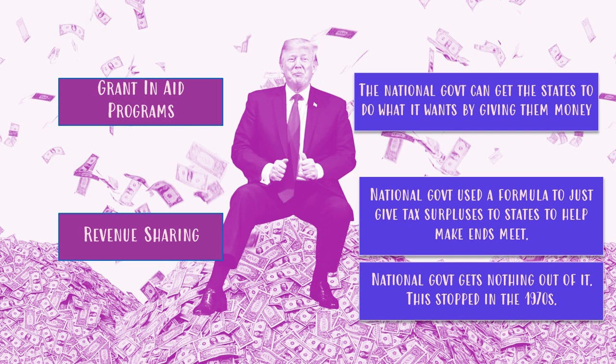Back before the 1970s, the national government took the extra money it made in taxes each year and divided it among the states according to a formula based on population and space. The national government was giving states money without getting anything in return. Starting in the 1970s, the national government realized a much more effective approach was to require states to do things in exchange for the money, which is why we've shifted to a system of grants.